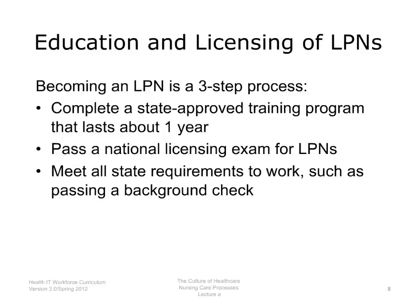There are three steps to becoming a Licensed Practical Nurse in the U.S. First, a student must complete about one year of nursing training in a program approved by his or her state. These training programs are offered at institutions such as vocational schools and community colleges. Students study science and nursing in the classroom and also perform supervised, hands-on patient care. When they complete their training, students must take and pass a national exam for Licensed Practical Nurses in order to earn the nursing license. To work in their state, students who pass the national exam must also meet all of their state's requirements, such as passing a background check or providing proof of high school graduation.